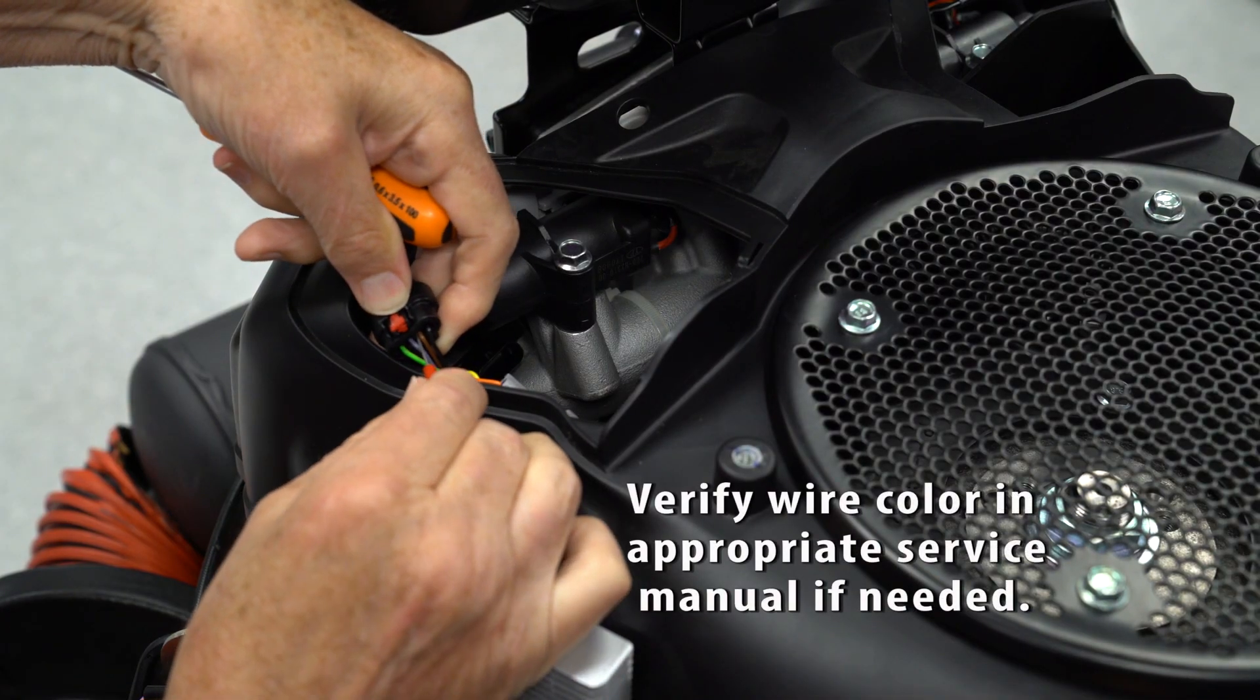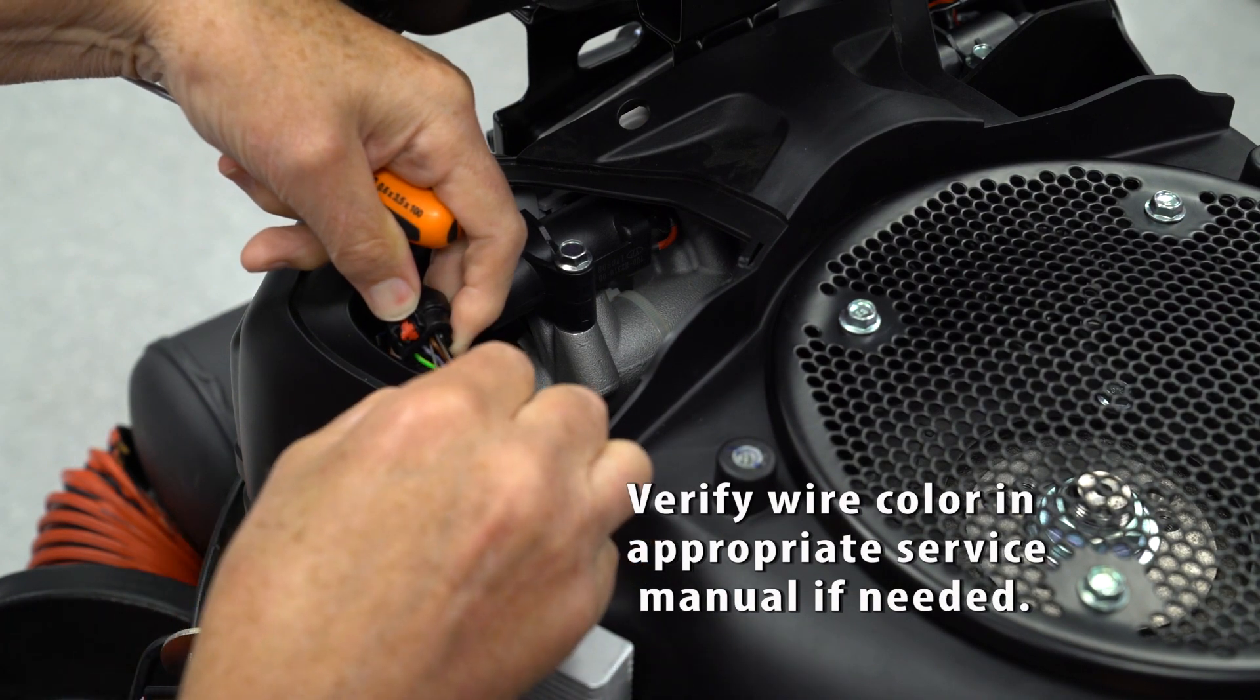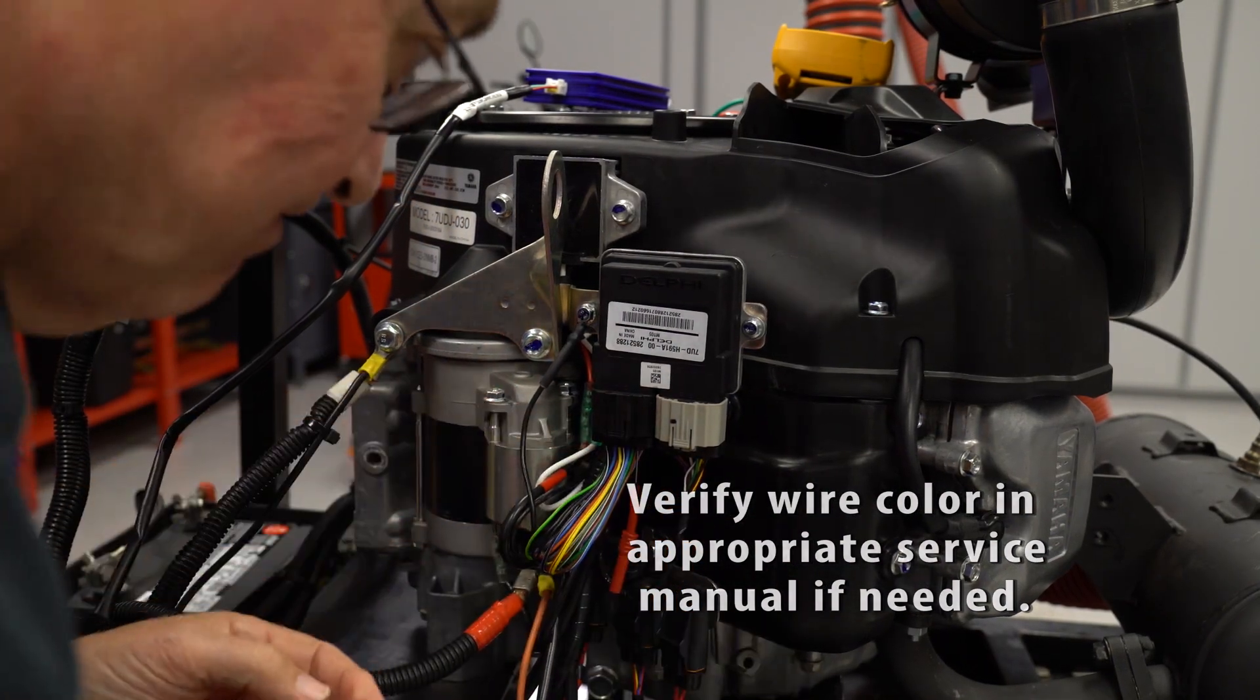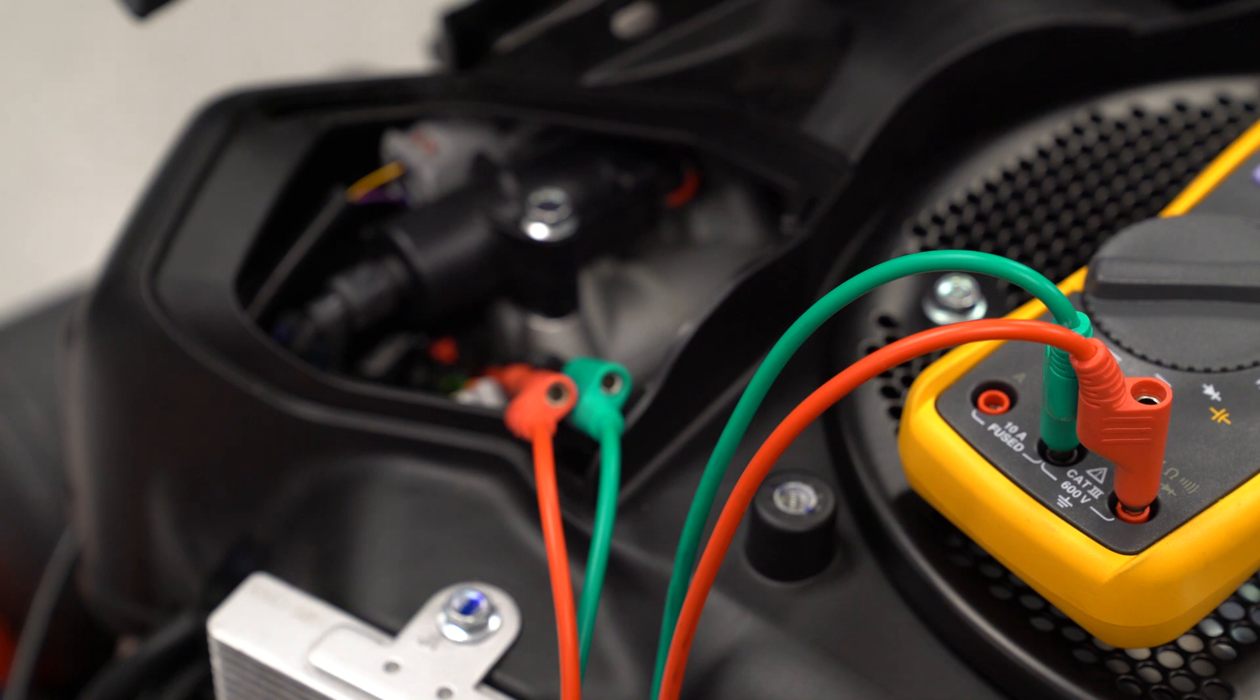Back probe to the brown wire and the black wire at the intake air temperature sensor. Also back probe to the brown wire at the ECU. Connect the positive lead of your voltmeter to the brown wire at the sensor and the negative lead to the black wire at the sensor.